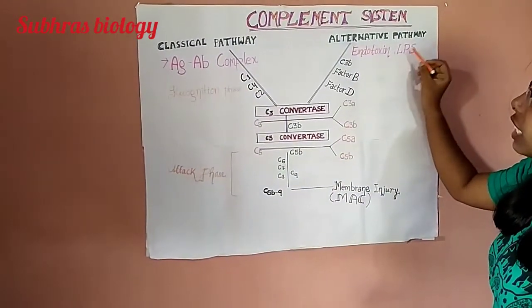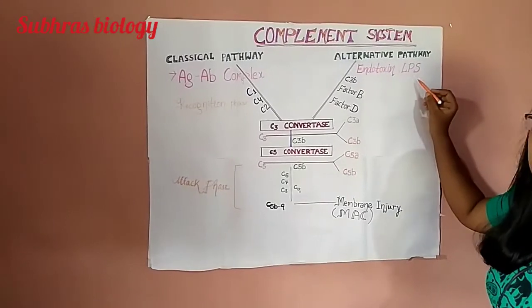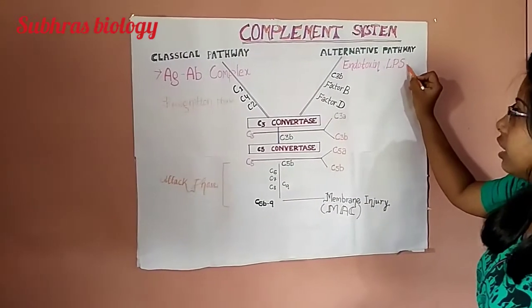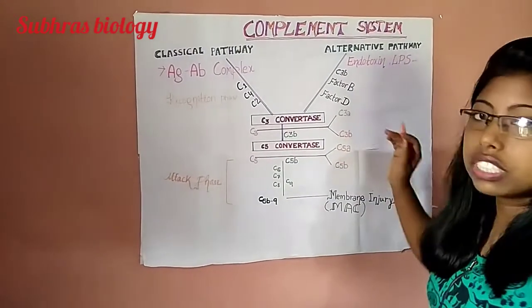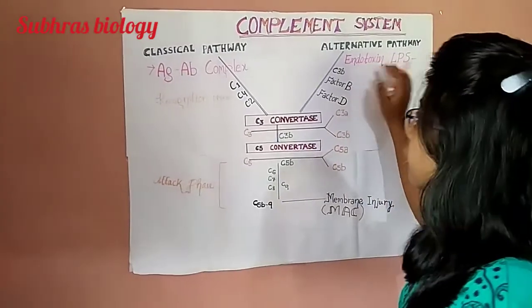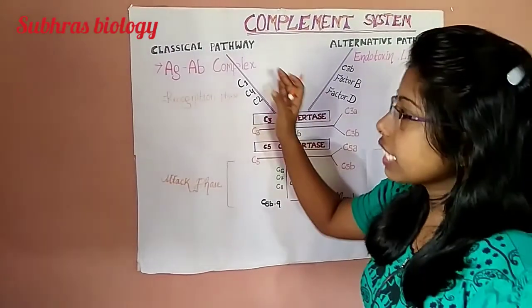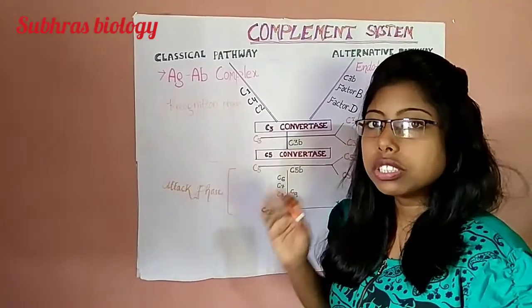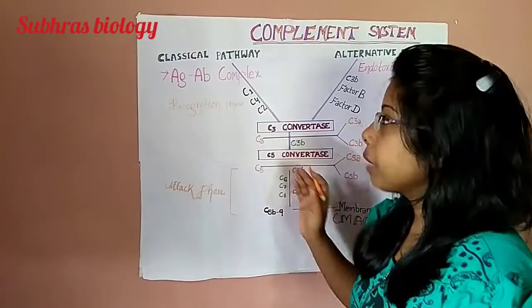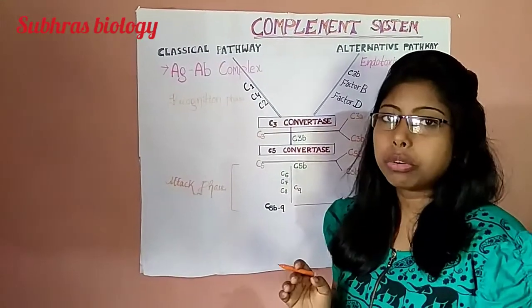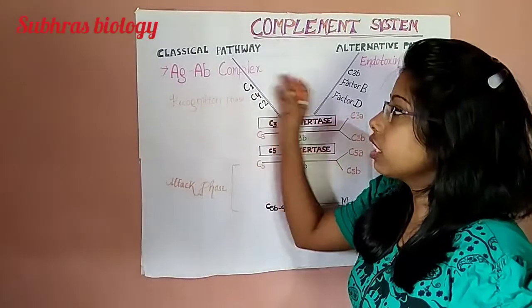And the alternative pathway is activated by endotoxin or the LPS or the lipopolysaccharides. No specific antibody is required for the alternative pathway. But in classical pathway, specific antibodies, mainly IgG and IgM antibodies, are necessary.